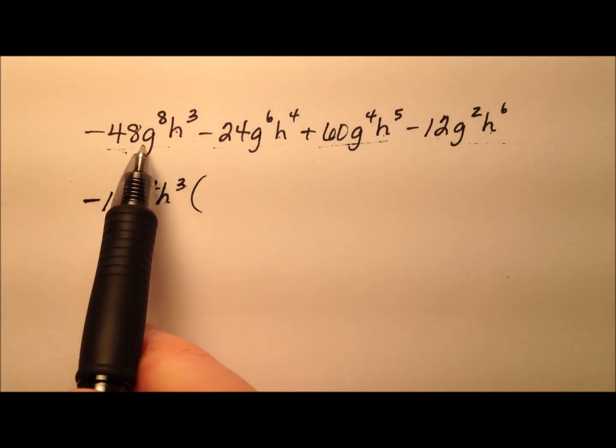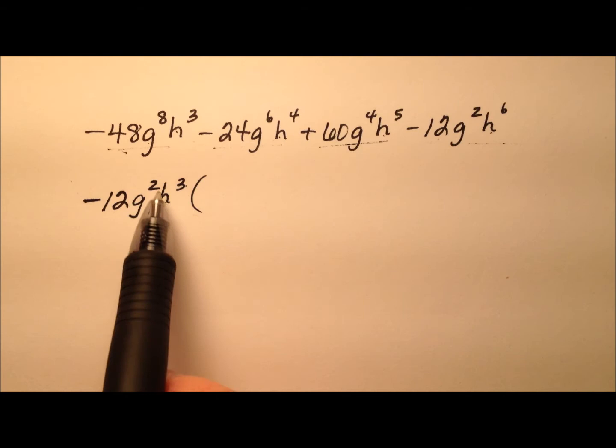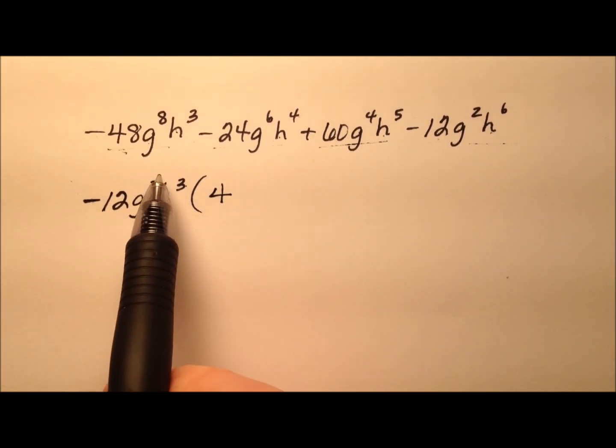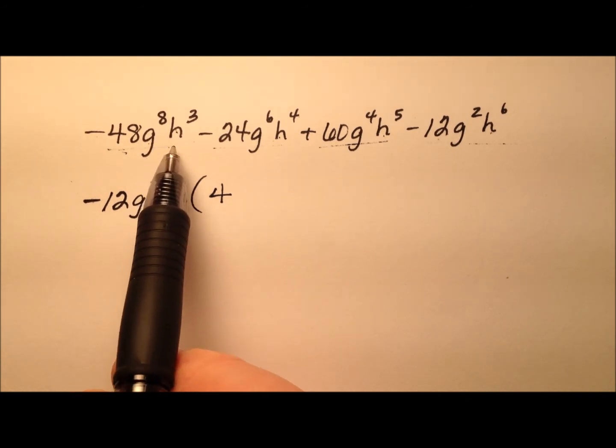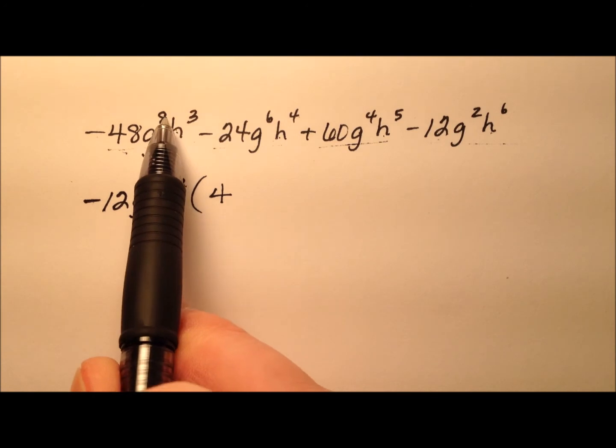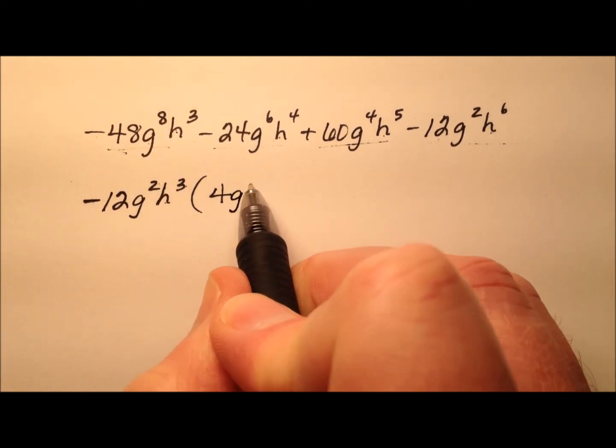Let's now divide it out of each of these four terms. Negative 48 divided by negative 12 is positive 4. When we divide variables, we subtract their exponents. So g to the eighth divided by g squared, 8 minus 2 is g to the sixth.